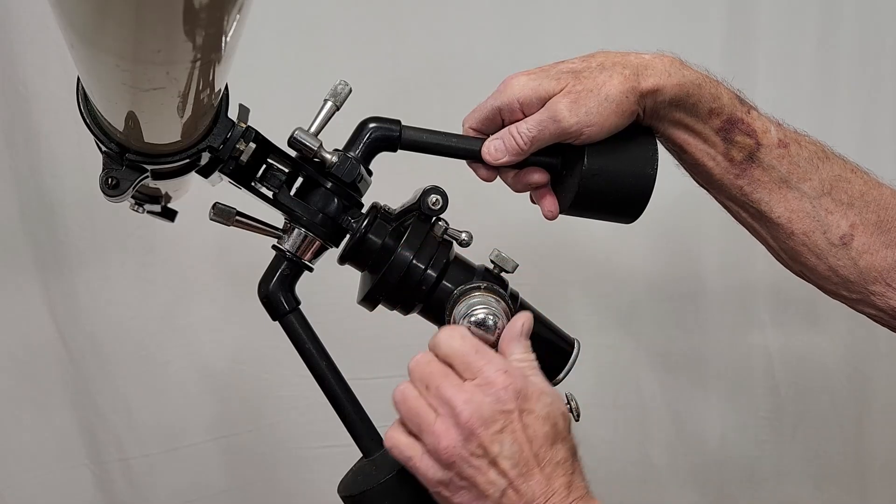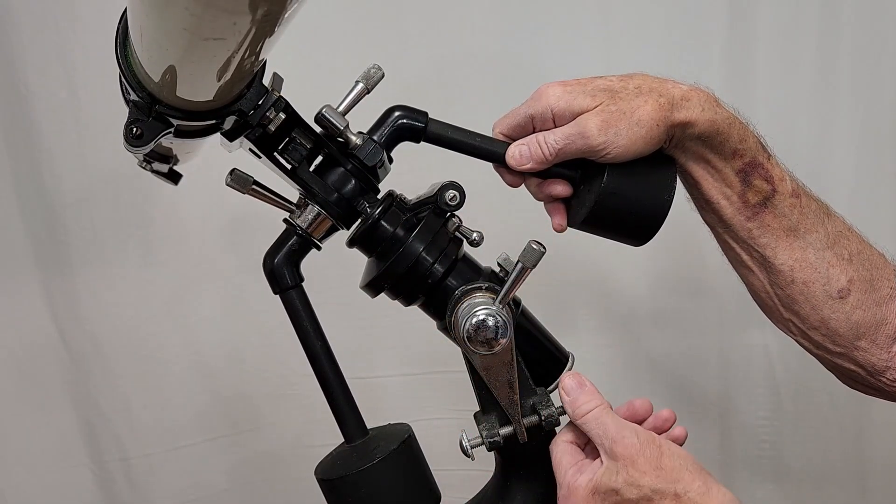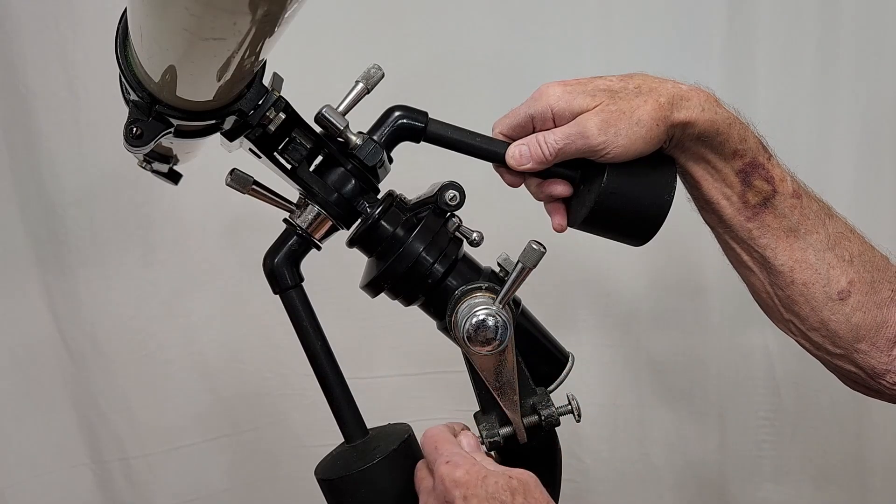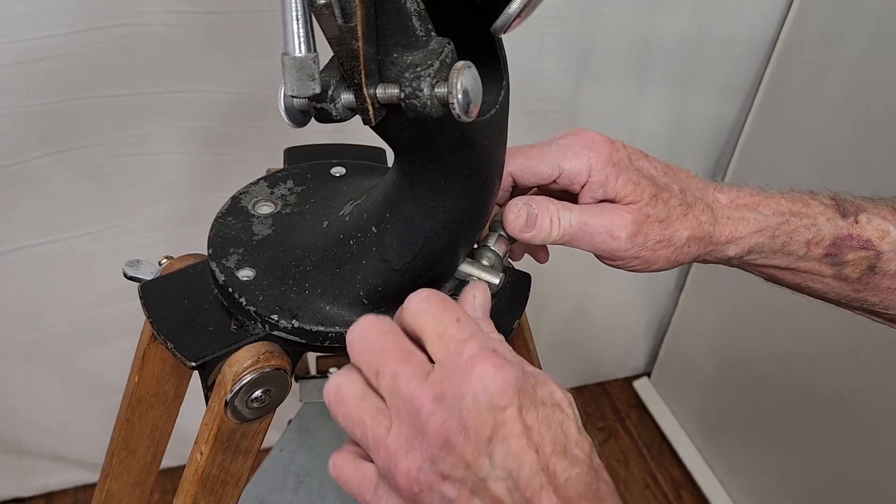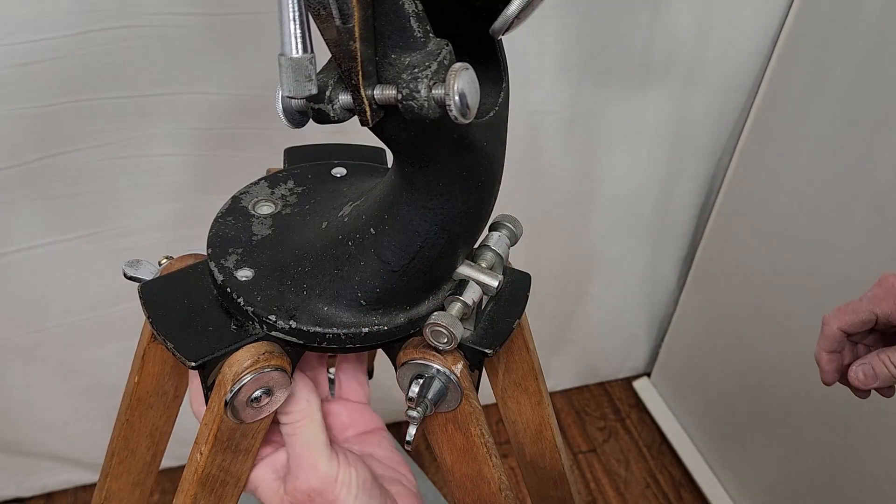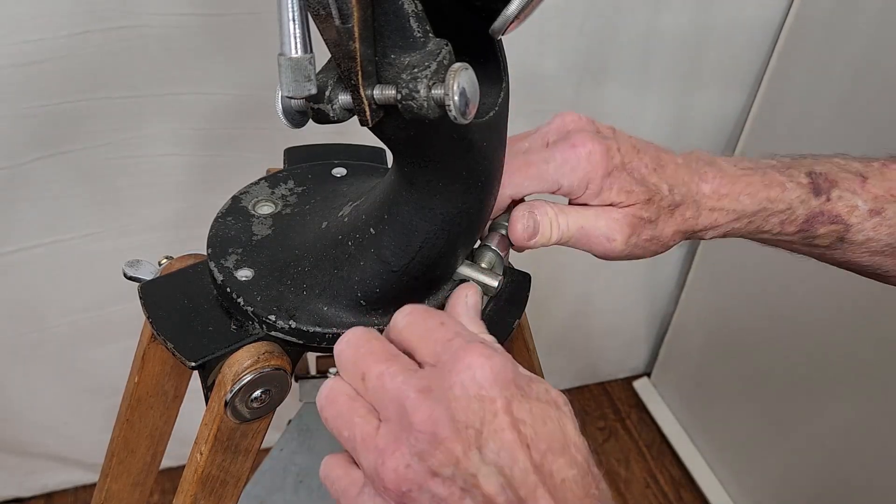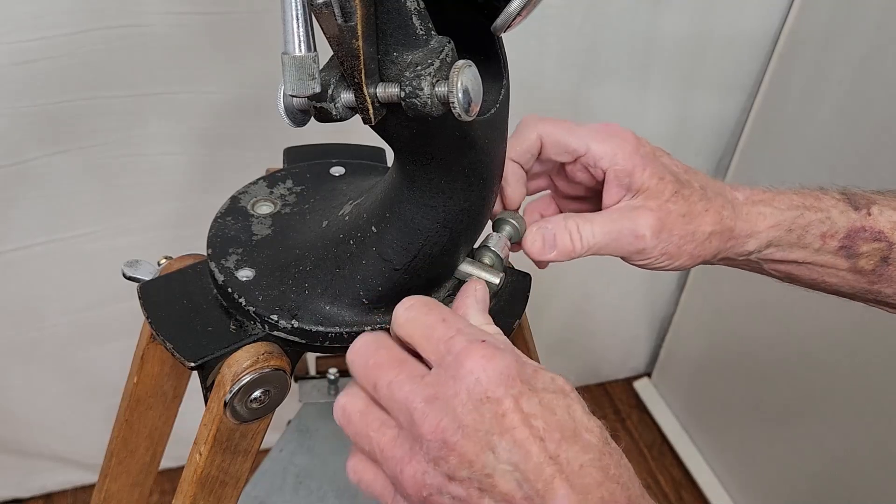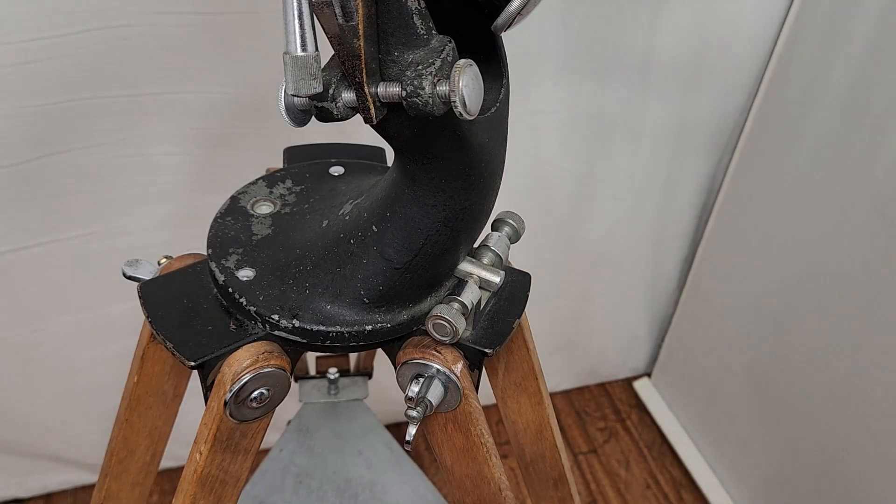This is your latitude adjustment. Now you loosen that, and then you can use this to adjust the latitude. How's that for fancy? This is the azimuth slow motion. There are three bolts down here holding the mount on. If you loosen those, you can adjust the azimuth here. The intention here was so that you could polar align this quite accurately.